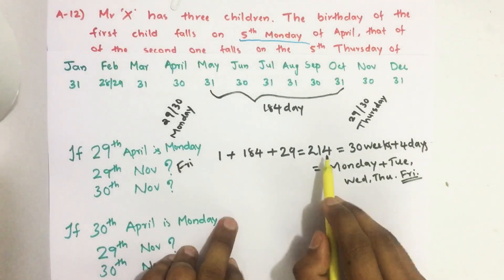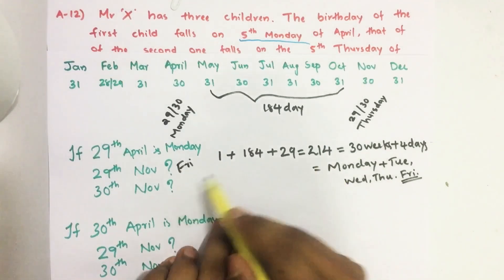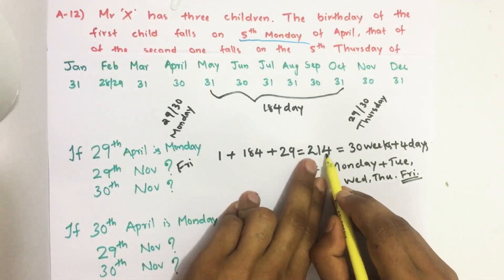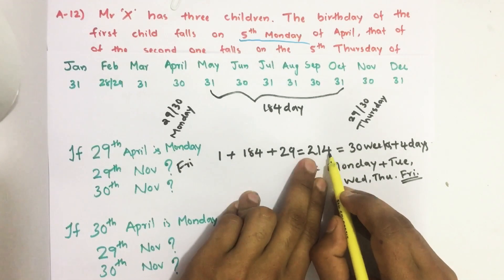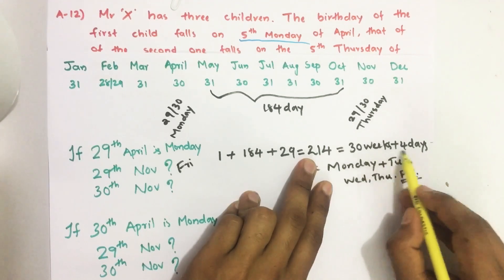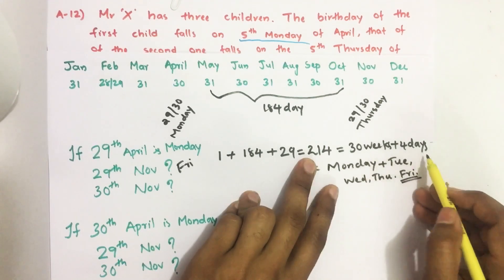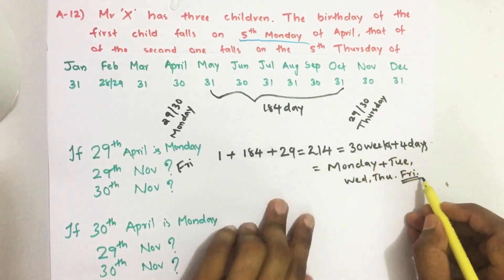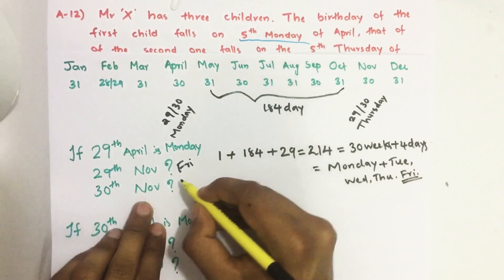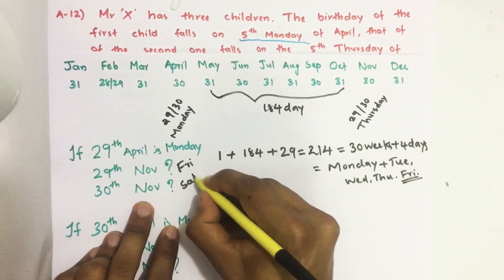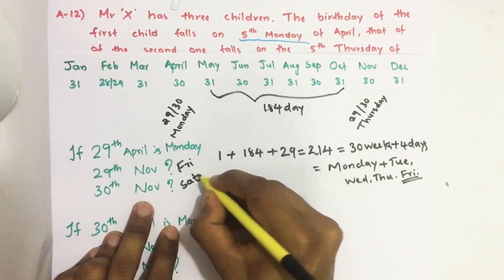Similarly, for 30th November, it will be 215 days, which means 30 weeks and 5 days. So we get 30th November as Saturday. So this case also does not satisfy the 5th Thursday condition.